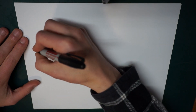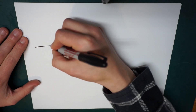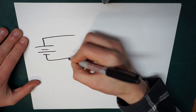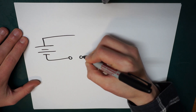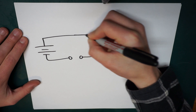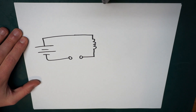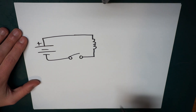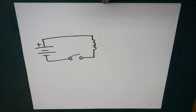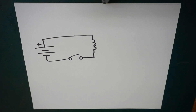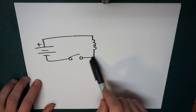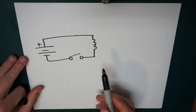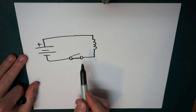To start, I'm going to use a simple circuit — just a battery, a switch, and an inductor. When the switch is open, it's pretty obvious that no current is flowing. What I really want to analyze is: when we close the switch, what happens?